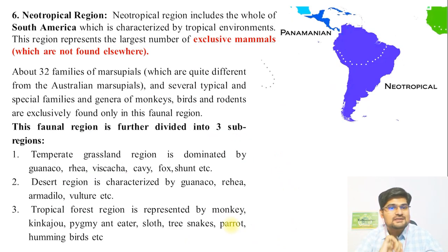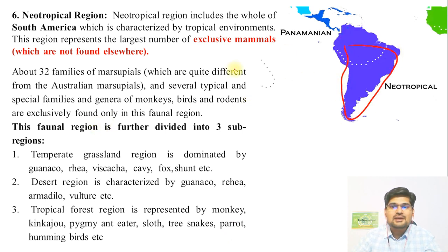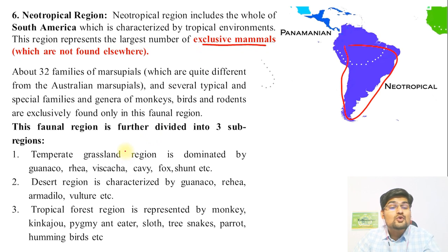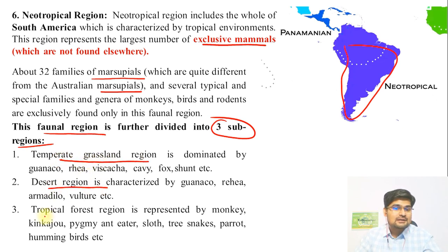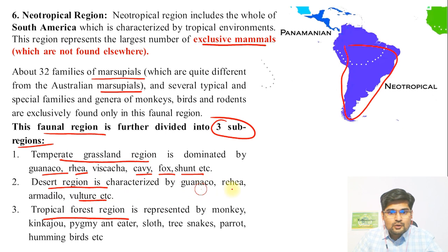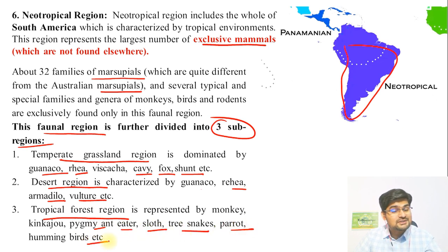The sixth region in Wallace's classification is the Neotropical region. Neo means new tropical region, which is part of southern America. This continent has very exclusive types of mammals found nowhere else in the world. Almost 32 families of marsupials, different from Australian marsupials, are found here. It has three sub-regions: temperate grassland has Guanaco, Rhea, Cavy, and Fox; the desert region has Vultures, Guanaco, Rhea, and Armadillo; and the tropical forest has Monkeys, Pygmy Anteater, Sloth, Tree Snakes, Parrots, and Hummingbirds.